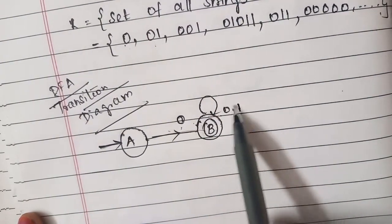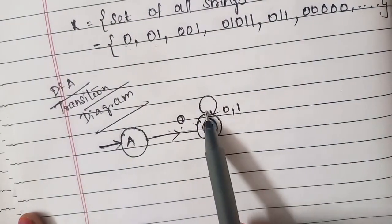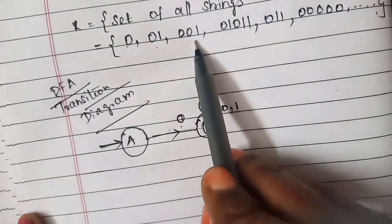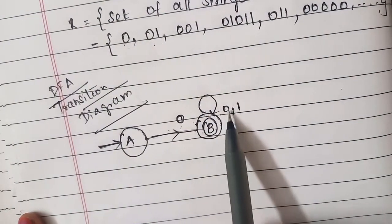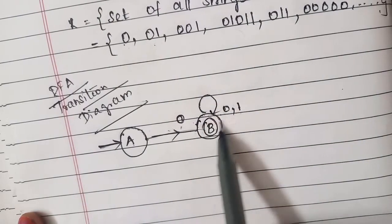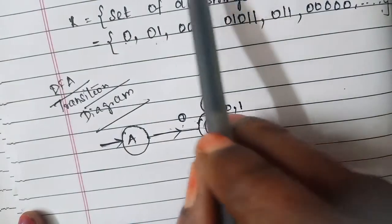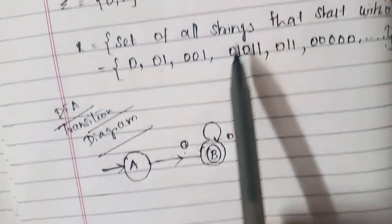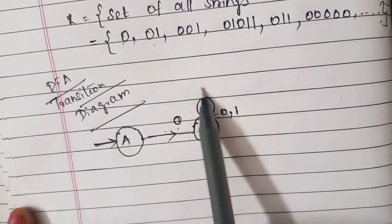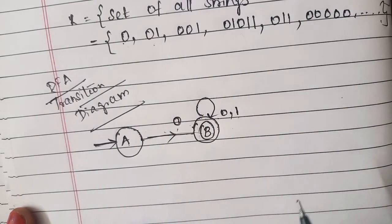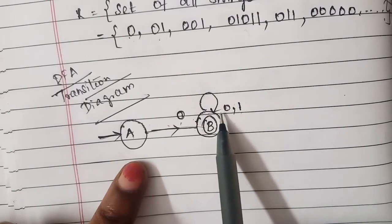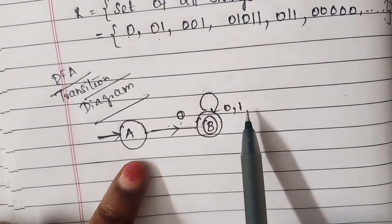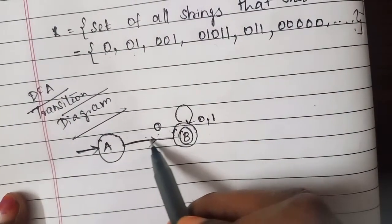On state B, if the input is 1, it stays on B; if the input is 0, it also stays on B. For the strings 01, 010, 0101 — whatever comes after the initial 0 — the DFA stays in the same final state. That's why I'm using a self-loop labeled 0,1 on state B. So after reaching B, any combination of 0s and 1s keeps the DFA in the final state.